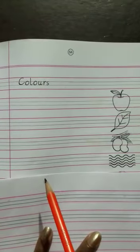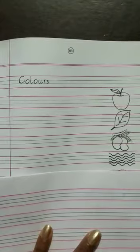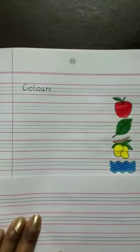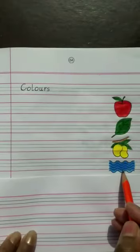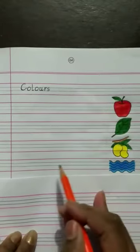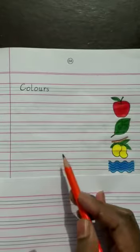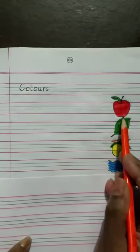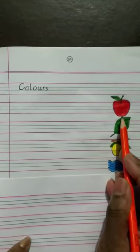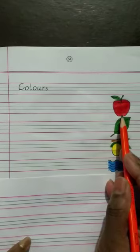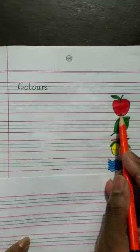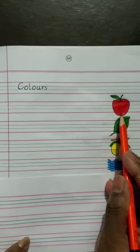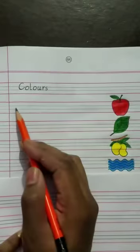Okay, I have colored these pictures. Now we will write the names of the colors. Children, what is this? This is an apple. And what color is this? This is red. Now here we will write red.